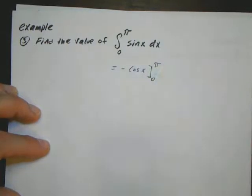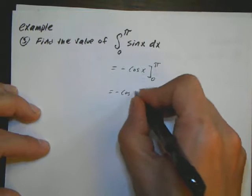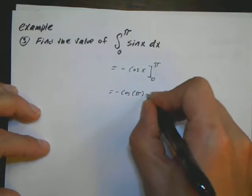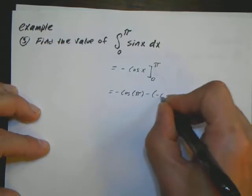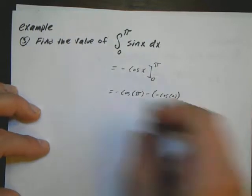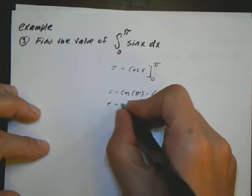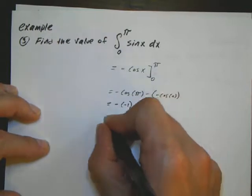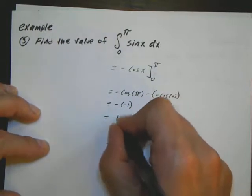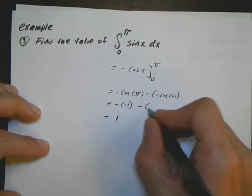Lower limit is 0, upper limit is pi. I now plug in my upper limit. It's going to be negative cosine of pi minus negative cosine of 0. Cosine of pi is equal to negative 1, so it's negative times the negative 1, which turns out to be a positive 1.